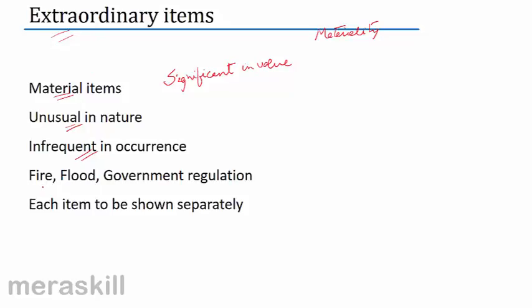Examples of extraordinary items: loss by fire or flood, or suddenly there is a government regulation which is significantly going to affect our revenues. Each extraordinary item is to be shown separately. So besides net income, we have done two more items — discontinued operations and extraordinary items — to be shown on the face of the income statement.